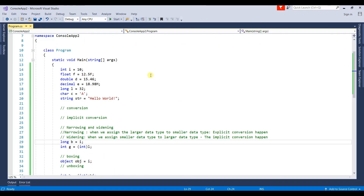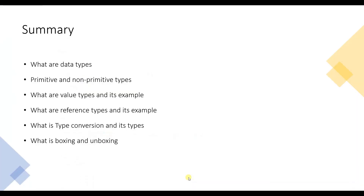So we have covered all the topics discussed today: what are data types, what are primitive and non-primitive data types, what are value types and their examples, what are reference types and their examples, what is type conversion and its types, and what is boxing and unboxing. That's it for this video, thank you for listening.